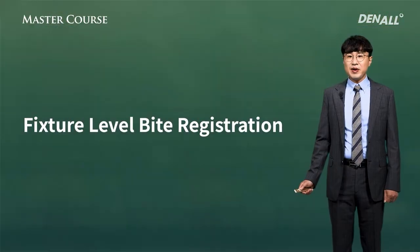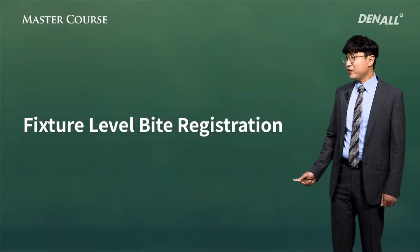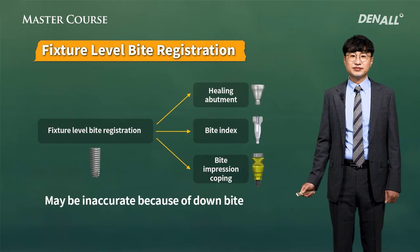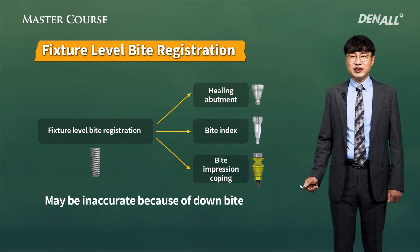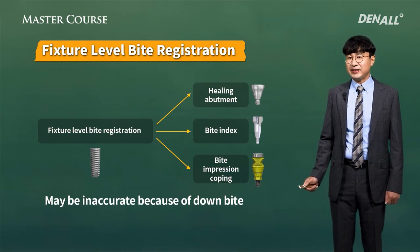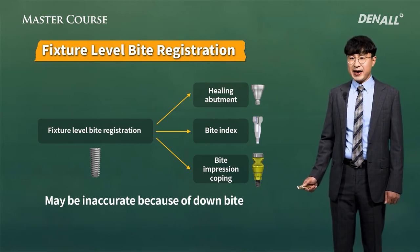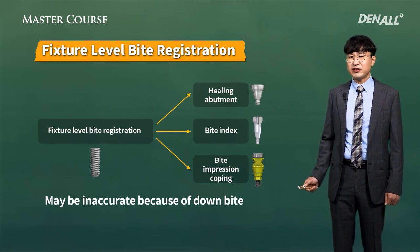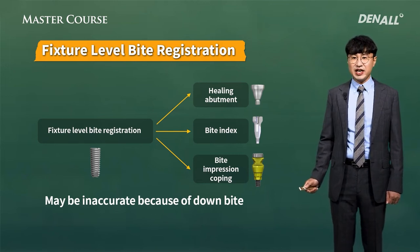Now let's look at fixture level bite registration. For bite registration at fixture level, you could use a healing abutment, but it's better to use a bite index or bite impression coping in terms of reducing errors. You can understand why by looking at the next slide.